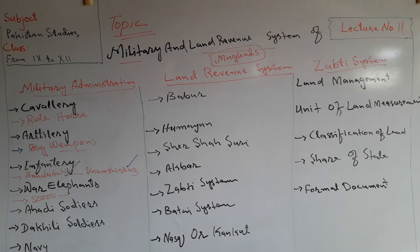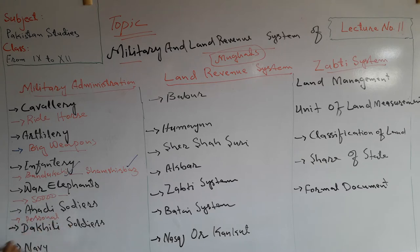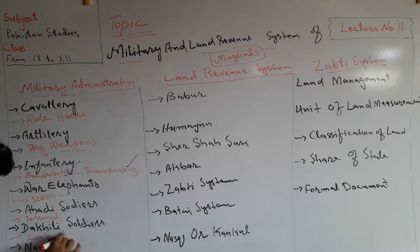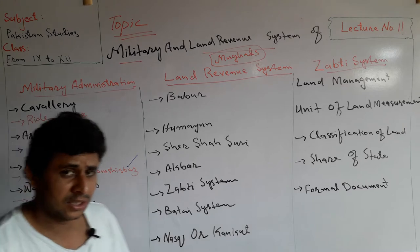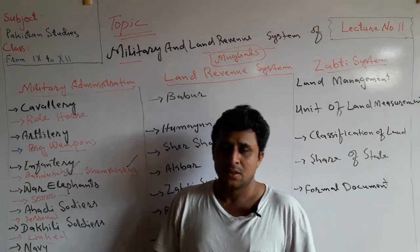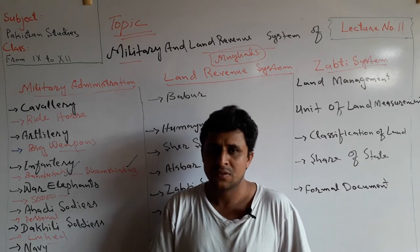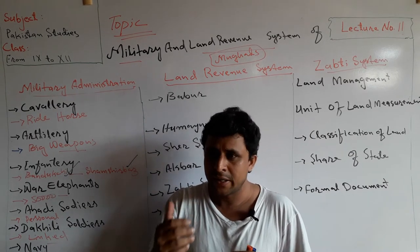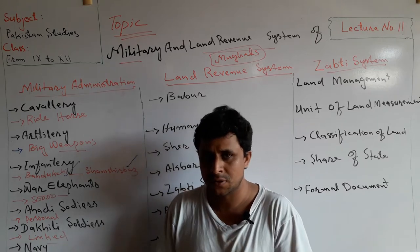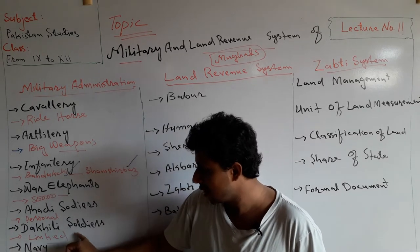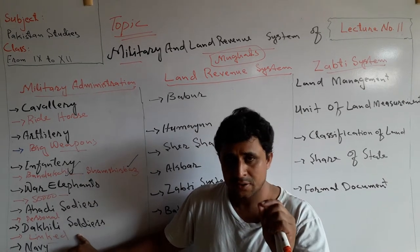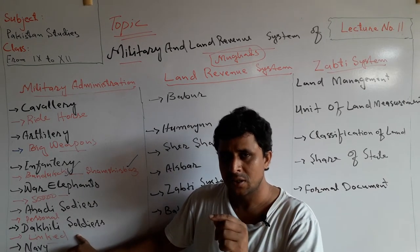Ahadi soldiers were the personal soldiers of the emperor. Dakhli soldiers served as a link between the Mansabdar and the emperor. The Mansabdar was a high-ranking civil servant officer, as discussed in previous lectures.